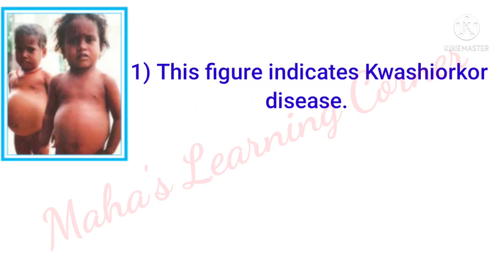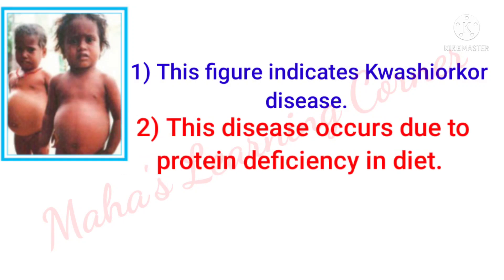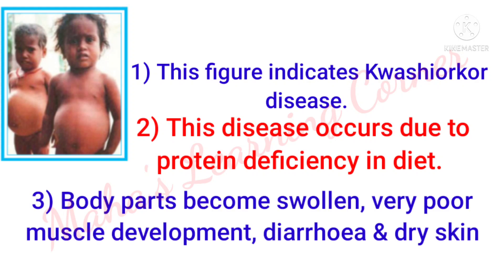This figure indicates kwashiorkor disease. This disease occurs due to protein deficiency in the diet. Symptoms: body parts become swollen, very poor muscle development, diarrhea, and dry skin.